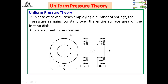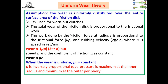Uniform pressure theory is applicable to new clutches. When the clutch is new, the springs are also new, and therefore pressure is constant over the entire surface area of the friction disk. This is the key assumption of this theory.